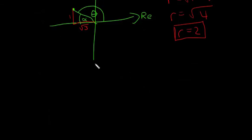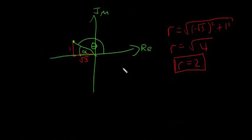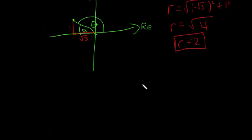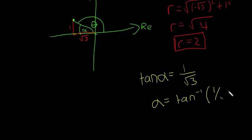So the way you do this is we find the angle alpha first. So we know that tan of alpha is equal to opposite over adjacent, so it's 1 over the square root of 3. So we can find that alpha is equal to the inverse tan of 1 over the square root of 3, and this is all done in your calculator.